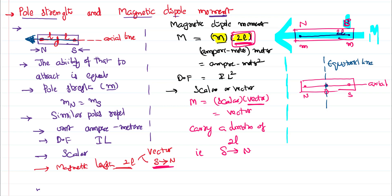In the next video, we will discuss what happens when you modify the physical dimensions of the magnet — what happens to the length, to the pole strength, and to the magnetic moment. Thank you for watching.